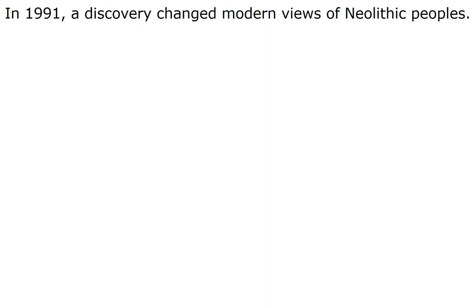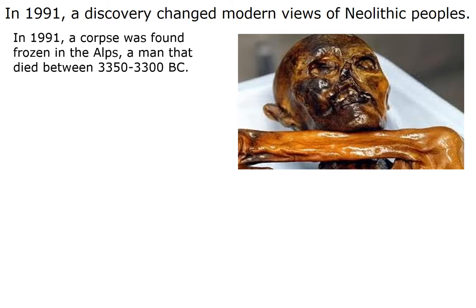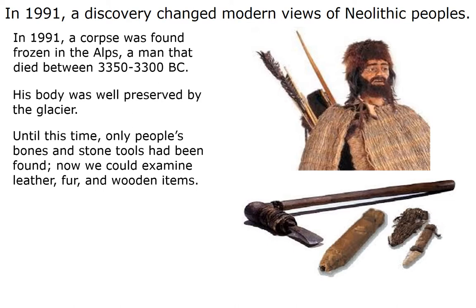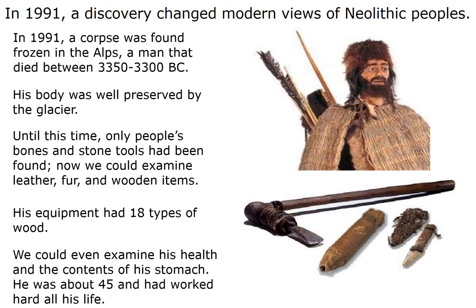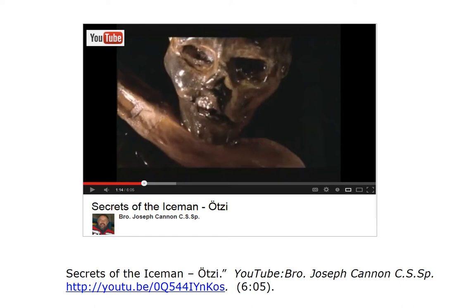The Iceman: we're going to talk about two recent finds that have changed our opinions about Neolithic people. In 1991, a discovery changed modern views of Neolithic peoples — a corpse was found frozen in the Alps, a man who had died between 3350 and 3300 BC. His body was well preserved by the glacier. Up until this time, only people's bones and stone tools had been found. But now we could examine leather, fur, and wooden items. His equipment had 18 different types of wood. We could even examine his health and the contents of his stomach. He was about 45 and had worked hard all his life. He had tattoos and a haircut.